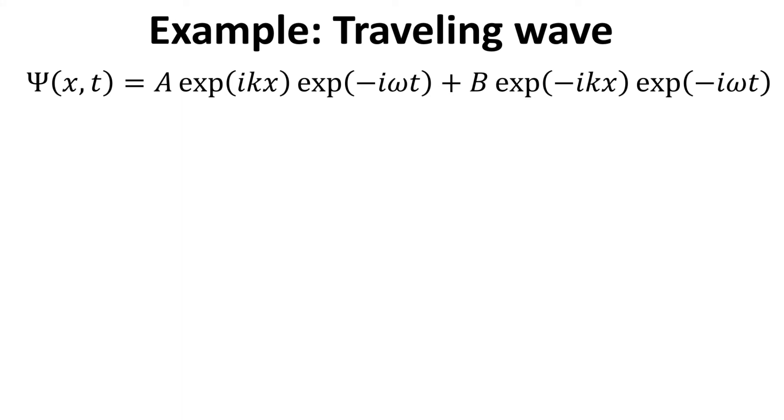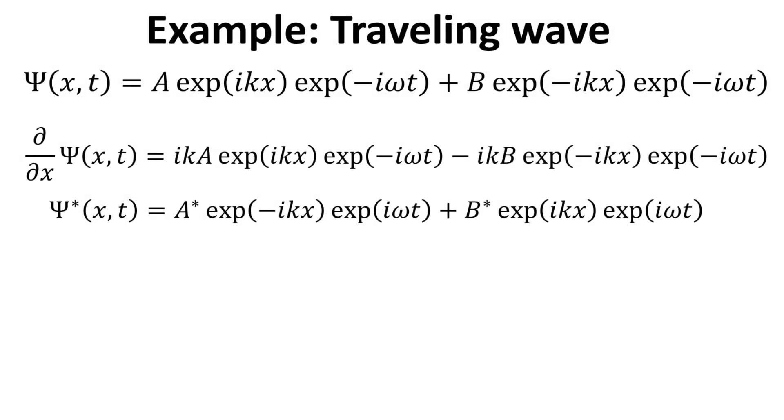Let's conclude this discussion with some explicit examples. Consider traveling waves with forward and backward propagating waves with amplitudes A and B. It should be rather straightforward to work out its spatial derivative and complex conjugate as shown.